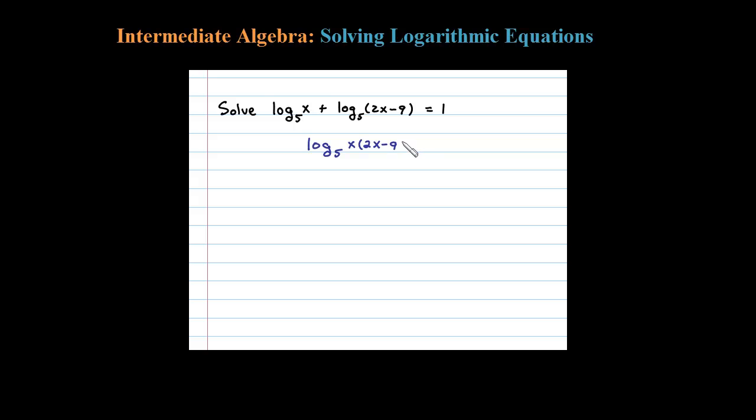And that's going to be equal to 1. Once you get one logarithm, you can convert that to an exponential using the definition. So in this case, base to this power, 5 to the 1 power, has to equal the argument x times (2x minus 9).